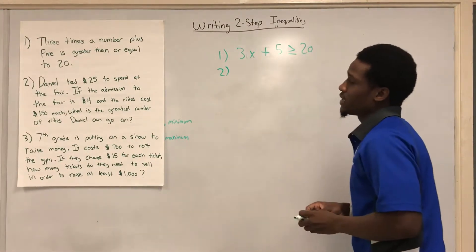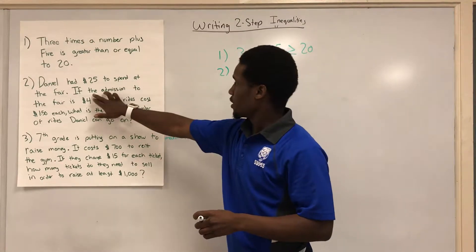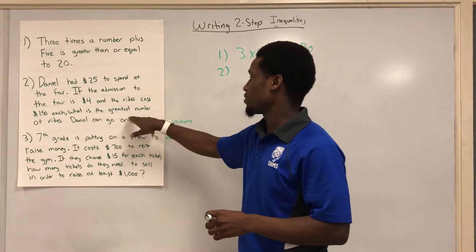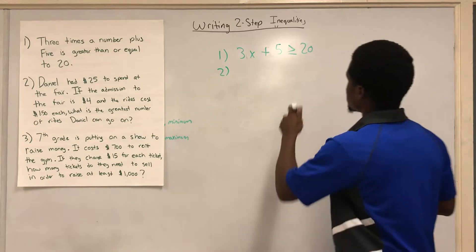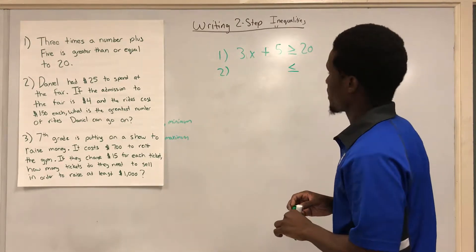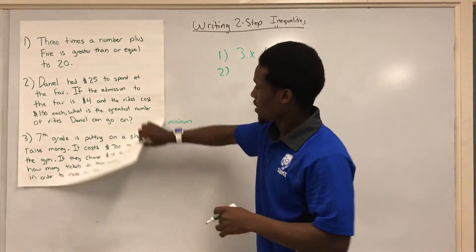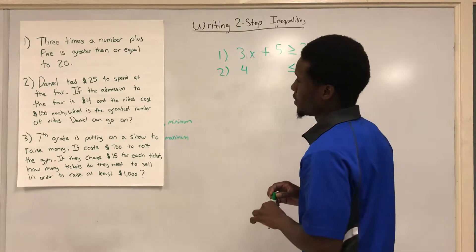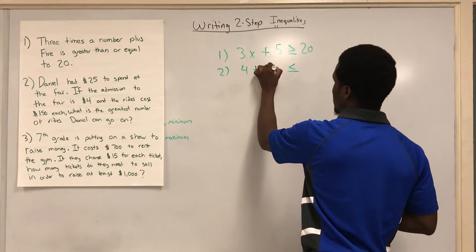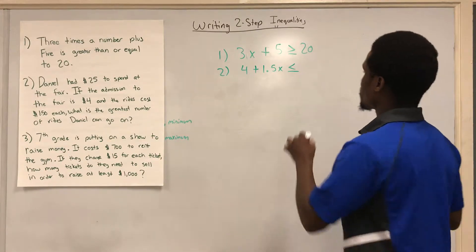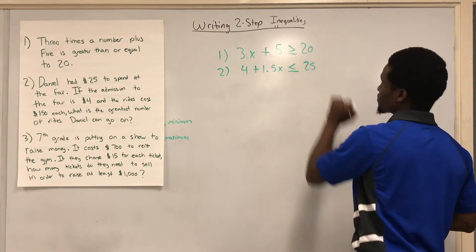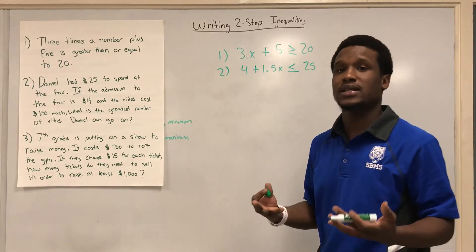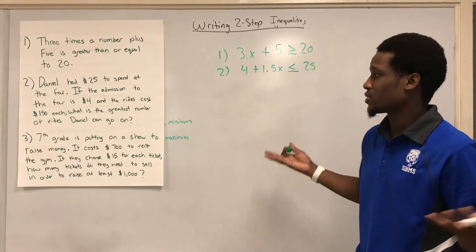Alright, so number two. Daniel had $25 to spend at a fair. If the admission to the fair is $4 and the rides cost $1.50 each, what is the greatest number of rides Daniel could go on? So that means less than or equal to, since I'm talking about the greatest, which is going to be the maximum that I could go. So the fare costs $4 to get in, and rides cost $1.50 each, so plus 1.5x. And we know for sure that we cannot spend more than $25. So this would be my inequality. 4 plus 1.50x is going to be less than or equal to $25. It has to be less than or equal to $25 because I can't spend any more. $25 is all that he has.